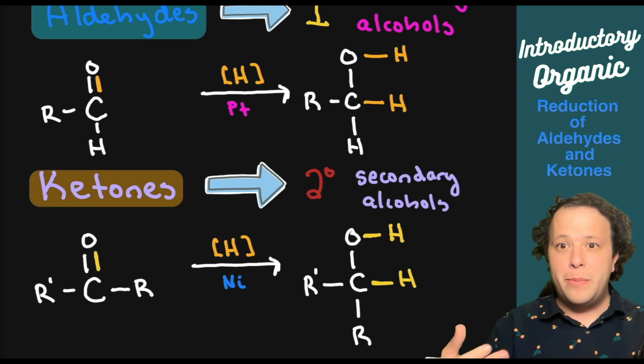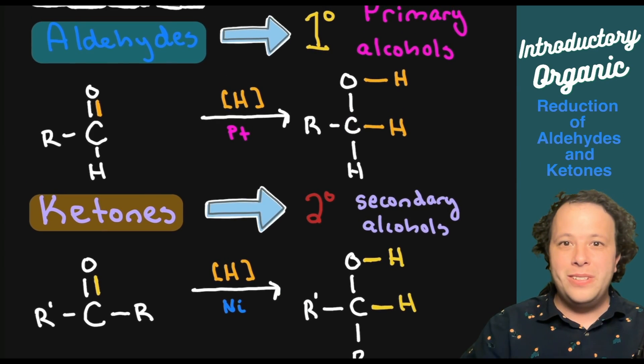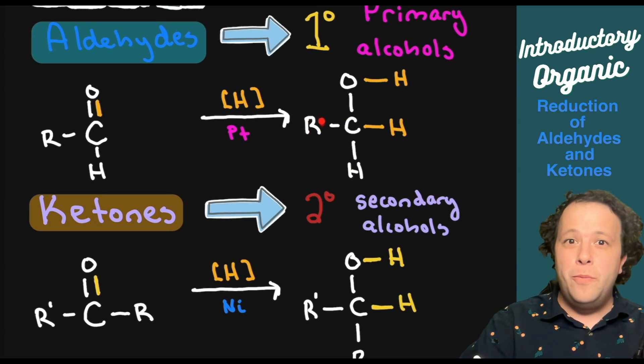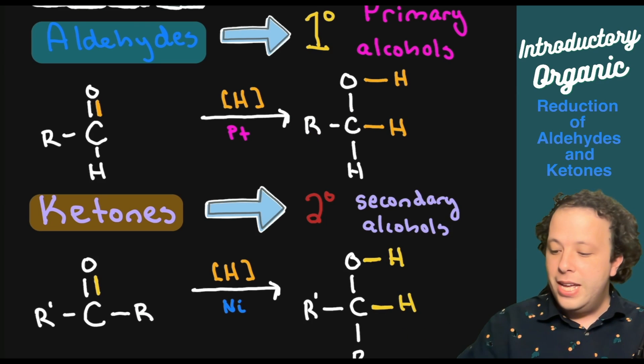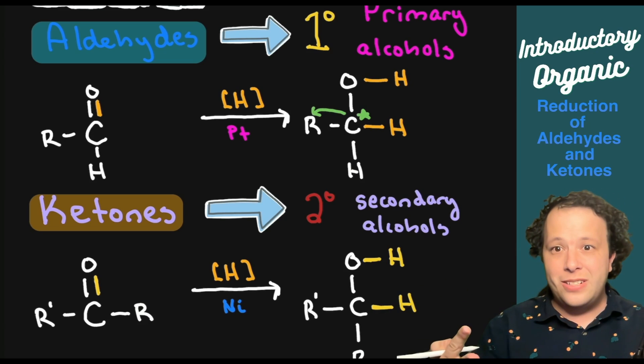We go to a secondary alcohol versus primary. To review what that means: when we have the primary example, we go to this carbon that's attached to the alcohol and count how many R groups there are next to the carbon with your alcohol. I put a little star and count the R groups next to it.